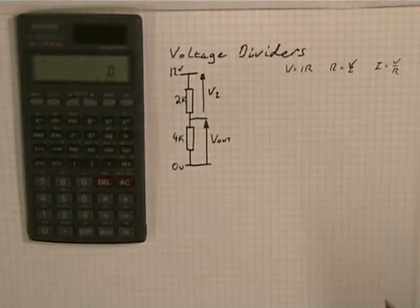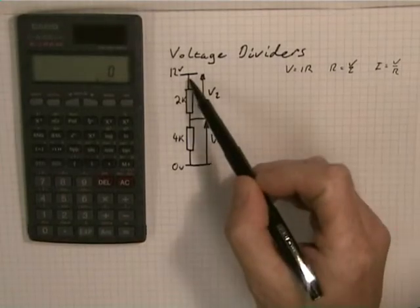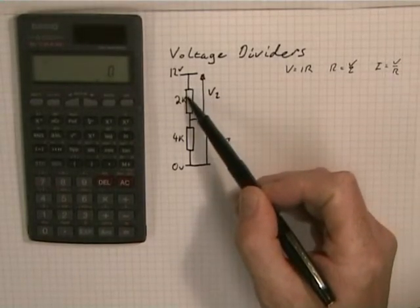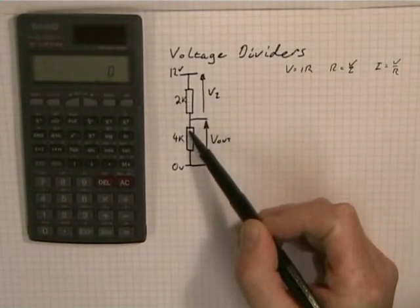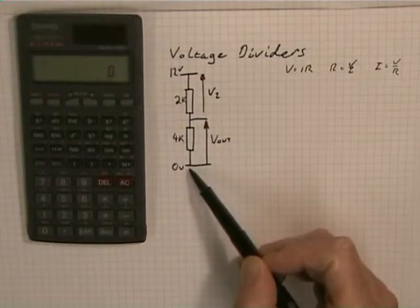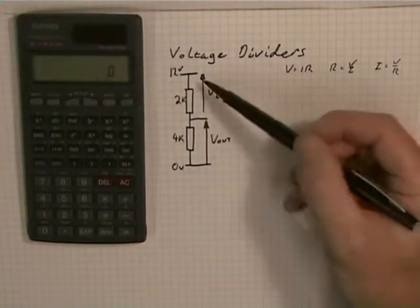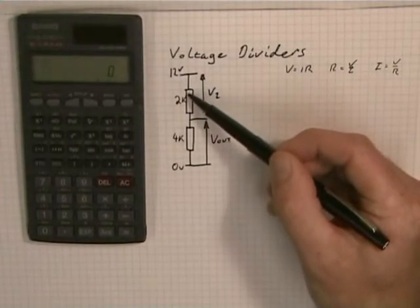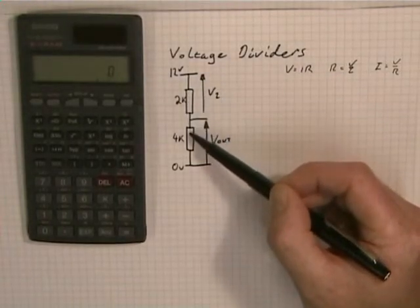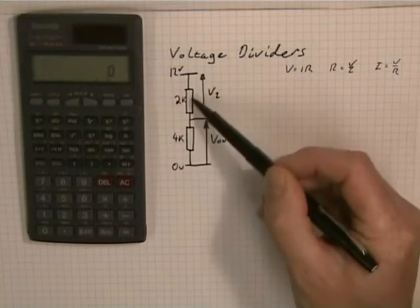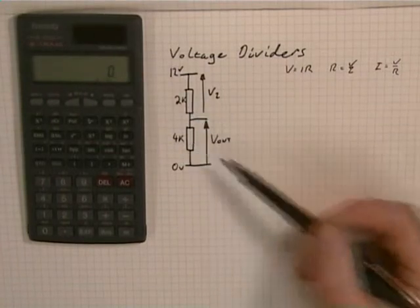We also know from Kirchhoff's current law that the current flowing down here must be the same all the way down. There's nowhere for the current to go. Remember, current is like water flowing. There's only one path for the water to go, so the water must come down here. So it's the same current going through the 2k as it goes through the 4k.